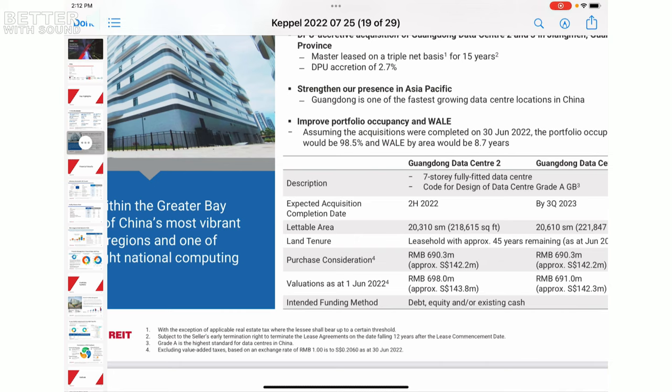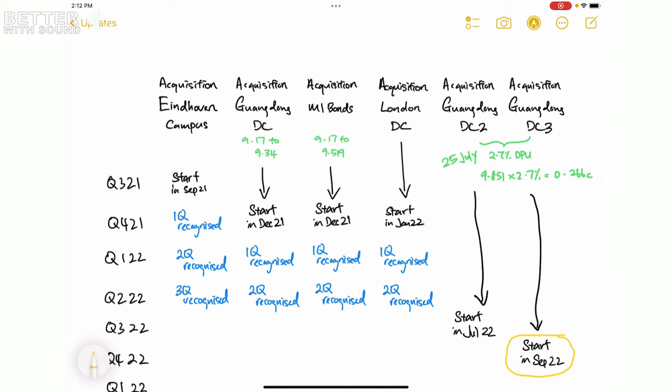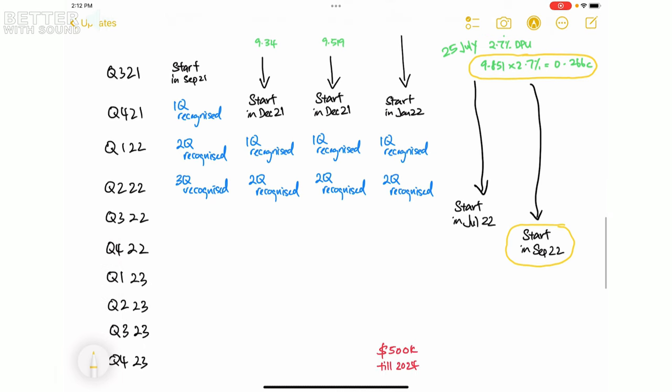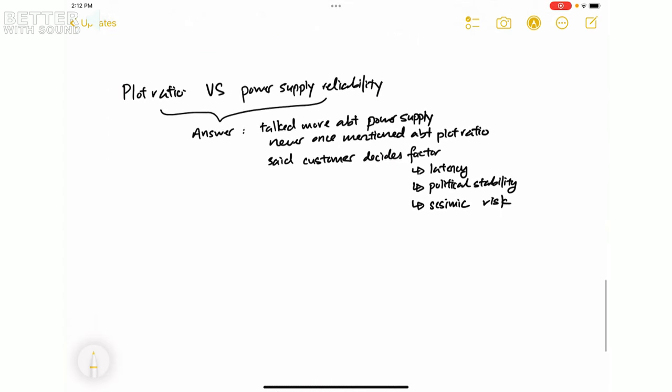FY21 dividend which was 9.851 cents. That's the second point, it's here which I'm circling in yellow right now, okay. That's the second point, so that will probably amount to around 0.266 cents, right? So with this in mind, I can continue to update my charts. And in fact, the third thing is...